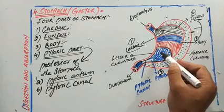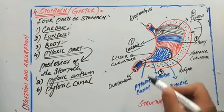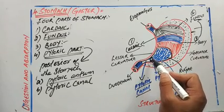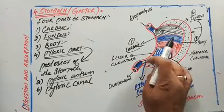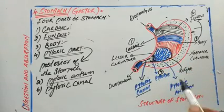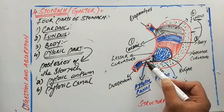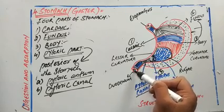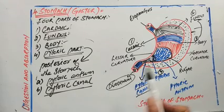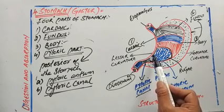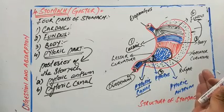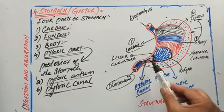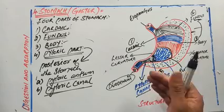The pyloric antrum is the opening which connects the main body to the pyloric canal. The pyloric canal leads to the first part of the small intestine, which we call the duodenum.